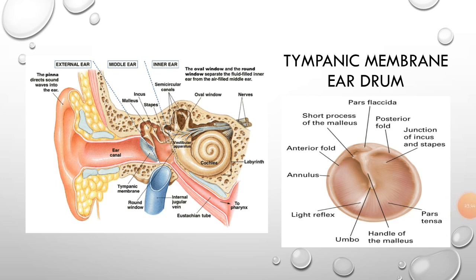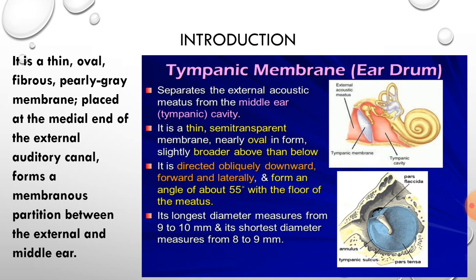In this diagram you can see the tympanic membrane — the ear drum — which forms the medial-most boundary of the external auditory meatus and also the lateral boundary of the tympanic cavity or middle ear cavity. It is a thin oval fibrous pearly-gray membrane at the medial end of the external auditory canal, forming a membranous partition between the external and middle ear. It is directed obliquely downwards, forwards, and laterally, forming an angle of about 55 degrees with the floor of the meatus.